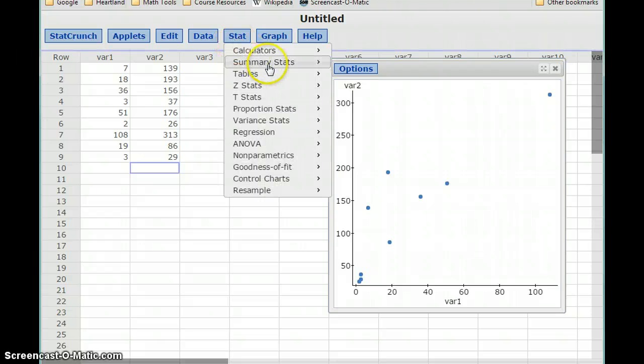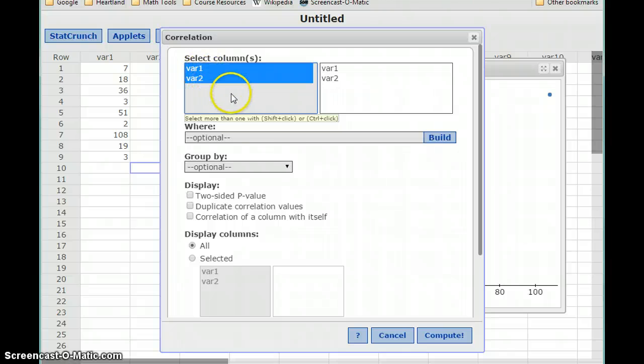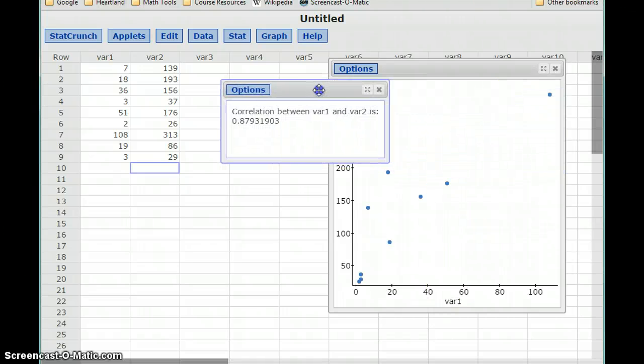So we'll select Stat, Summary Stats, and then Correlation. We'll select the two variables that we want to consider, so for correlation we always need two variables to consider, and then we'll select Compute. And this is going to output that correlation statistic for us. So in this case, a little over 0.87.